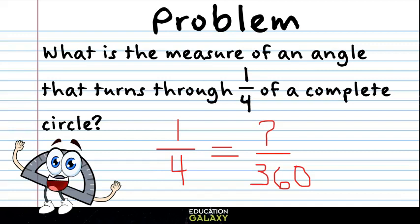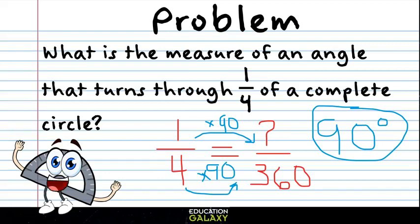To get from 4 to 360, we would multiply by 90. That means we need to multiply the numerator by 90. 1 times 90 is 90. So our answer is 90 degrees.